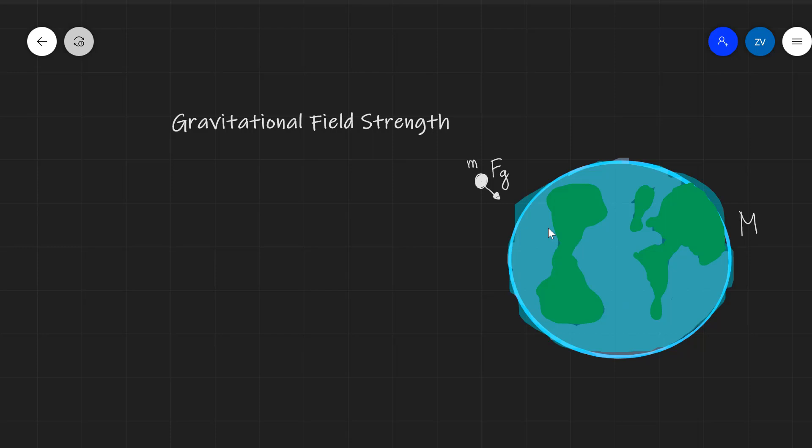Now, we can say that the net force acting on this point mass, F net, will be equal to the gravitational force, which is Fg. However, now we actually know an expression for the gravitational force.